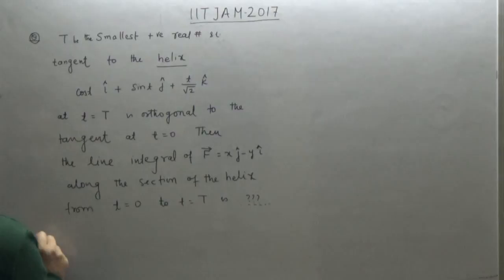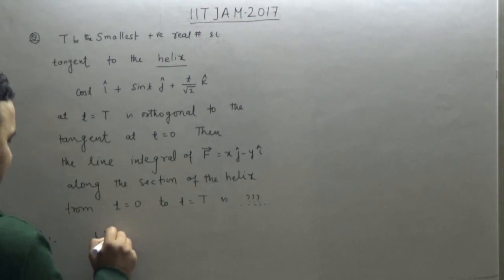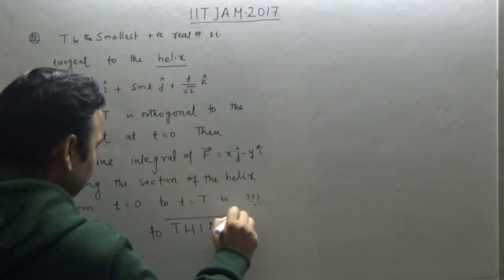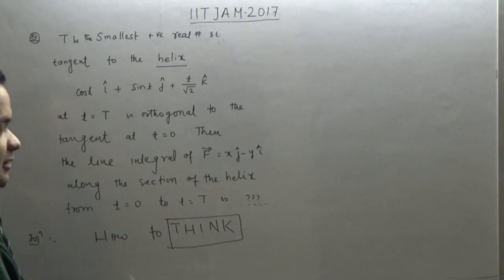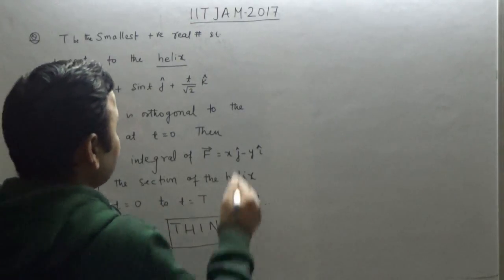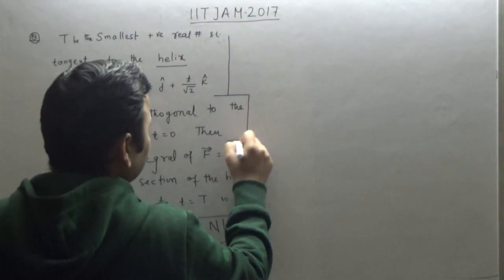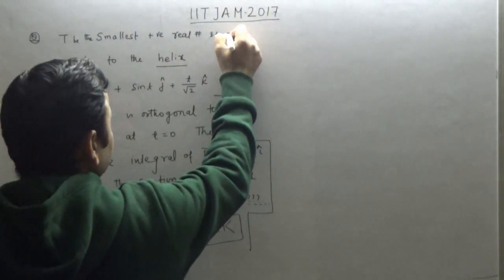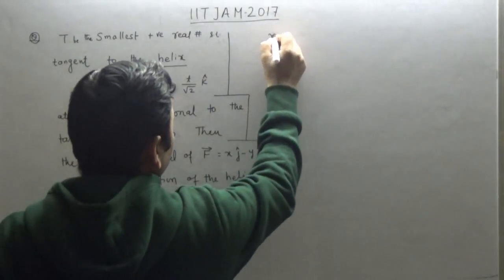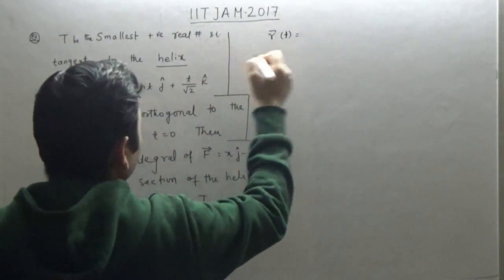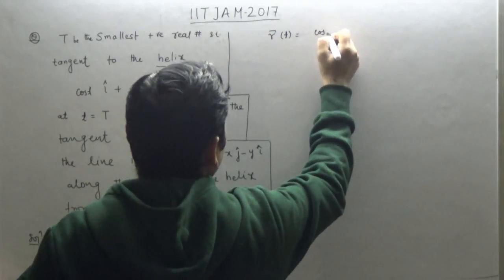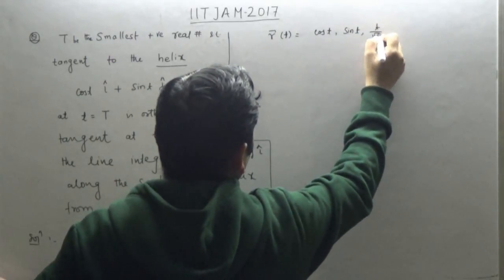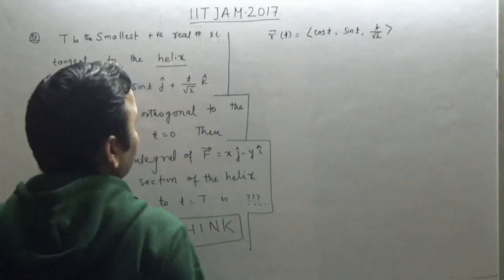Always start by thinking about how to approach this kind of problem — that's important. Even if you are not able to solve it, having the right ideas is better. So the curve — the vector curve r(t) — is given as r(t) = cos(t) i + sin(t) j + (t/√2) k, where t is the parameter.